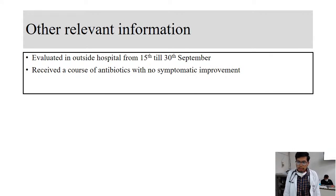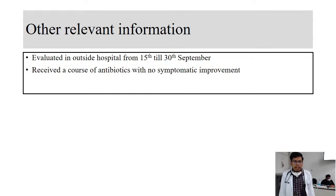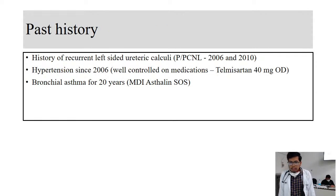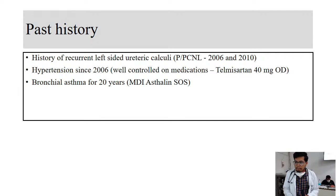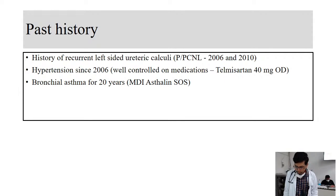For this febrile illness, the patient was evaluated in an outside hospital from 15th to 30th September and received a course of antibiotics with no improvement in fever. Regarding past history, the patient had recurrent left-sided ureteric calculi for which he underwent PCNL twice. He is also a known case of hypertension since 2006, well controlled on telmisartan, and had bronchial asthma for the last 20 years, but was now completely asymptomatic and off treatment.